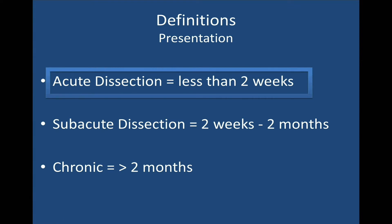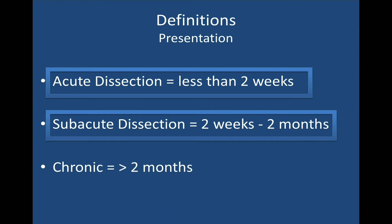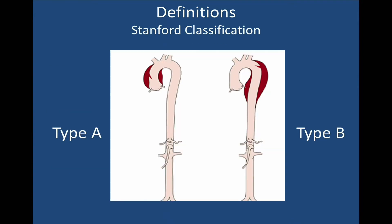We're talking about acute dissection basically within two weeks of presentation versus a subacute or chronic dissection. We're not talking about type A dissections in this talk — we're talking about type B dissections, where the tear occurs usually in the descending thoracic aorta and involves the distal aorta. It might involve the arch, but it certainly doesn't involve the ascending aorta. That's the domain of a cardiac surgeon, not a vascular surgeon.